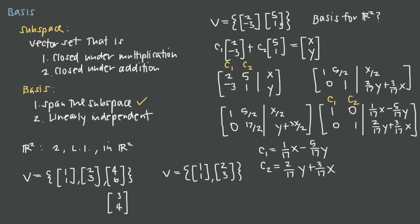The remaining question is whether the two vectors are linearly independent. To check, we use the same equation but set the right-hand side to the zero vector [0,0]: C1×[2,-3] + C2×[5,1] = [0,0]. We can use the system we already found and simply plug in x=0 and y=0.